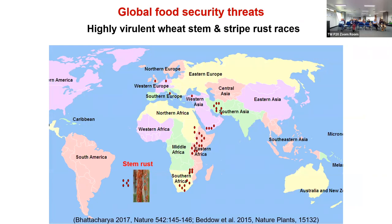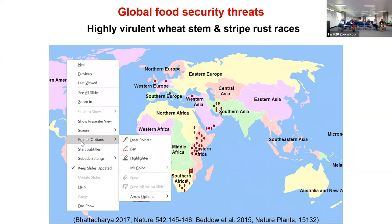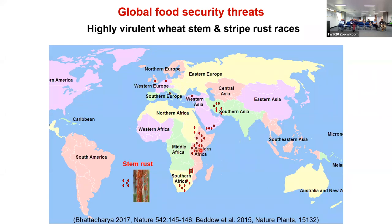Rust has become a major threat to global food security because of highly virulent stem and striped rust races. One key race is UG99, which emerged in eastern Africa during 1999. More than 80% of worldwide wheat cultivars have become susceptible to this race. The Borlaug Global Rust Initiative consortium brought more than 30 researchers around the globe to mitigate the spread. Within 10 years it evolved more than 10 different lineage races, spreading to South Africa, the Middle East, and — strikingly — stem rust reappeared in Europe where there had been no sign of it for 50 years.